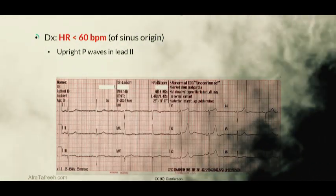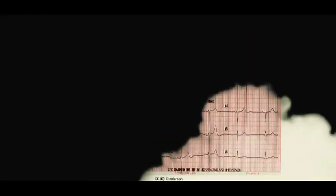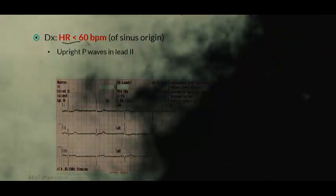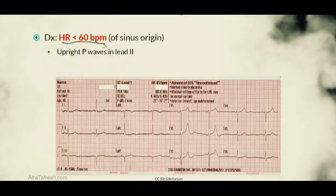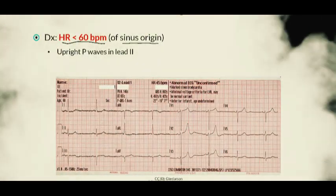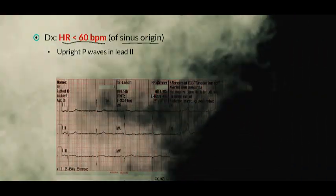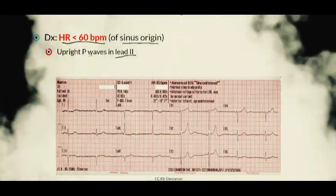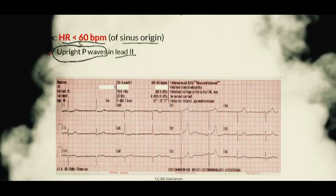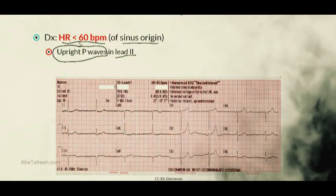We can diagnose sinus bradycardia using an EKG, which classically shows a heart rate less than 60 beats per minute of sinus origin. We can tell the bradycardia is of sinus origin by looking at lead 2 and confirming there are upright P waves. To calculate heart rate, we count the number of QRS complexes on a 10-second strip.